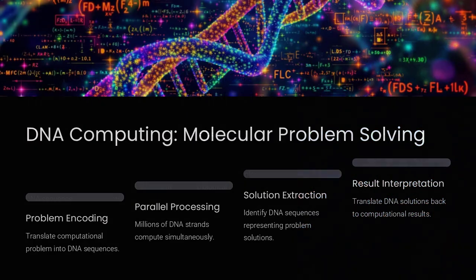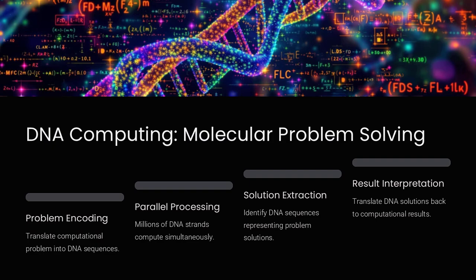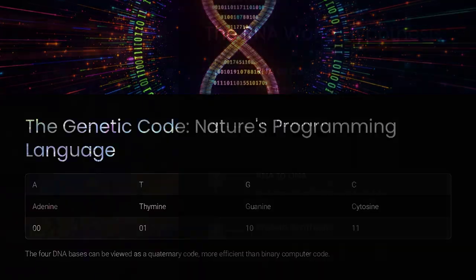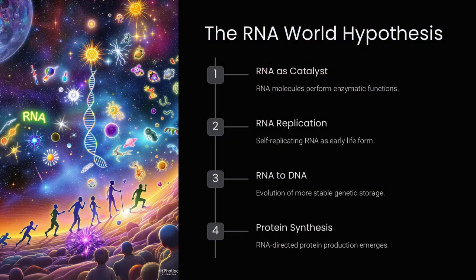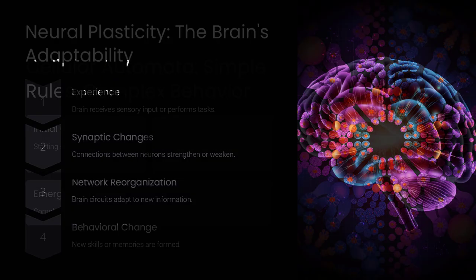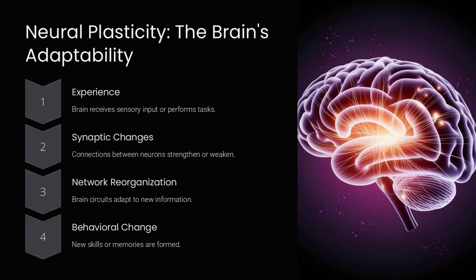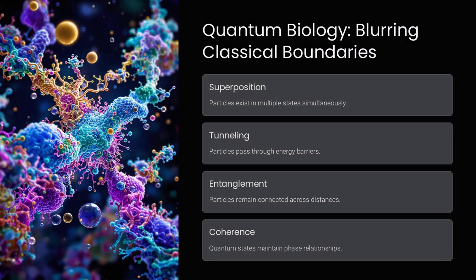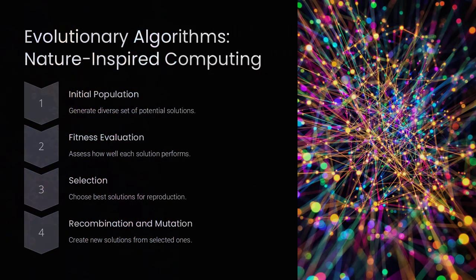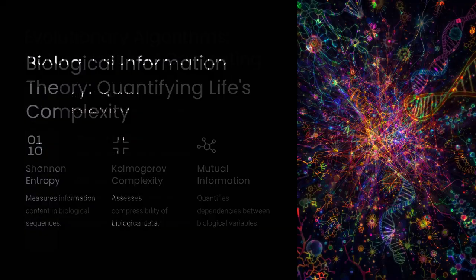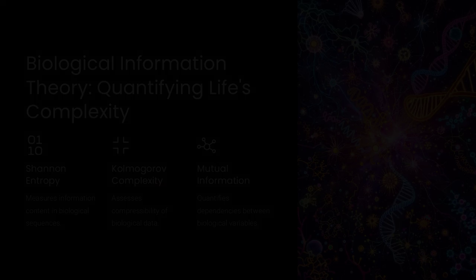This paradox pushes scientists to explore whether biology operates with principles akin to quantum computing, holographic storage, or even self-organized criticality, revealing that living systems may encode and process information far more efficiently than any human-made system. Could this help us design smarter AI, better data storage, or even uncover deeper laws of nature?